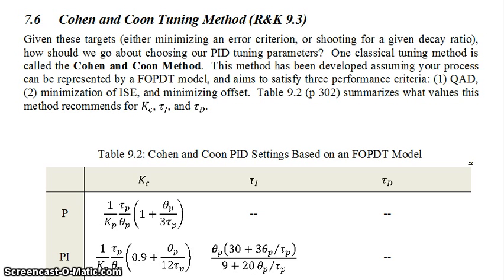One classical tuning method is called the Cohen and Coon method. This method has been developed assuming that your process can be represented by a first order plus dead time model. So that's very important. You assume that you have a first order plus dead time model in hand and it aims to satisfy three different performance criteria.